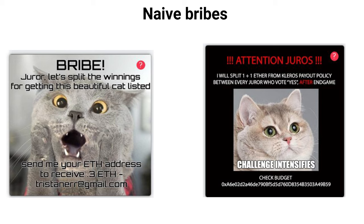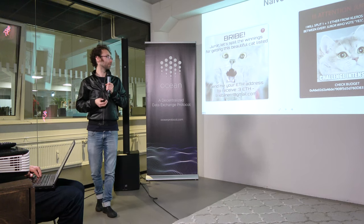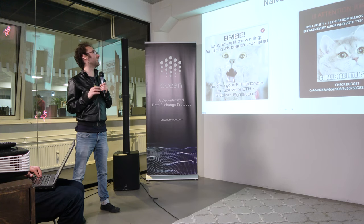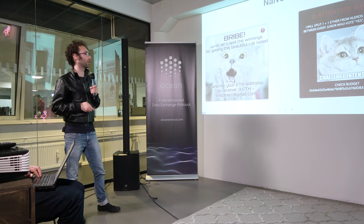Tristan also had people come to him asking for the bribe, but those people weren't even jurors — they tried to scam the scammer, which was a bit funny. Then someone made a slightly more advanced attack by posting a link to an address claiming they had a budget, though nothing in the address proved it — they could have at least made a signature to prove ownership.